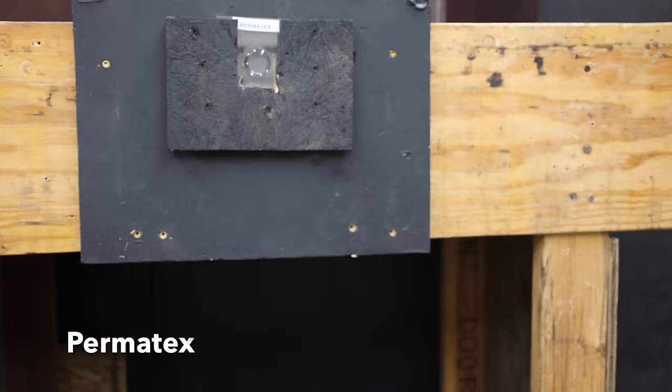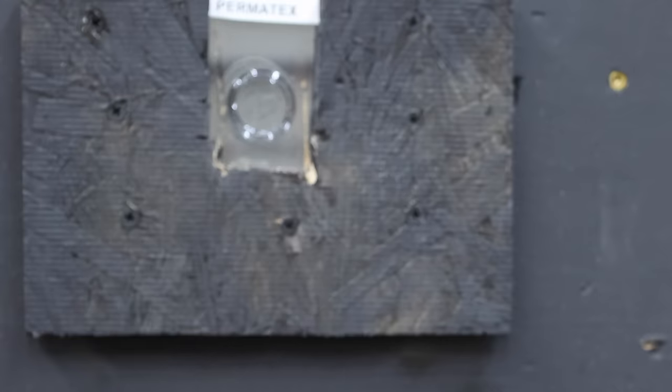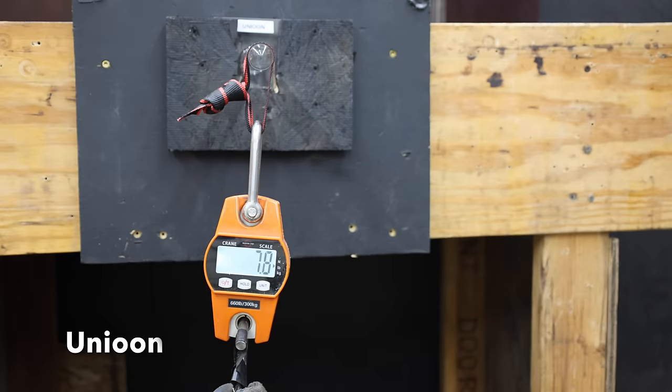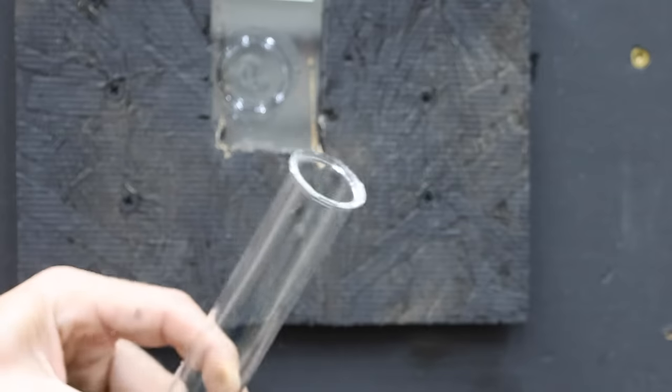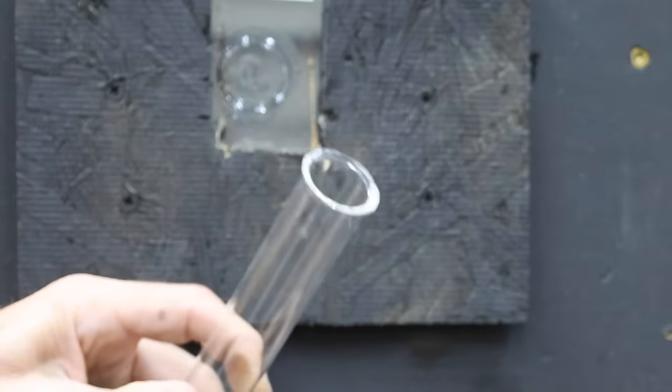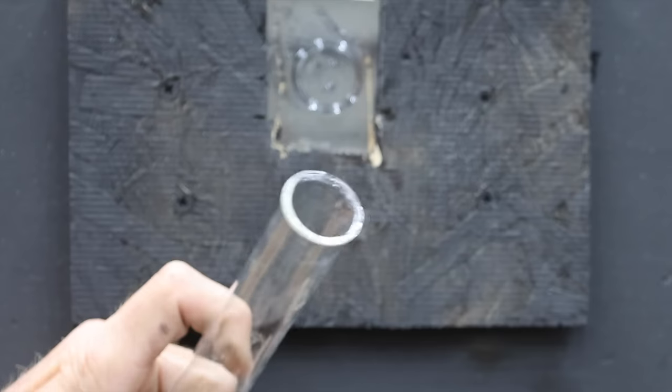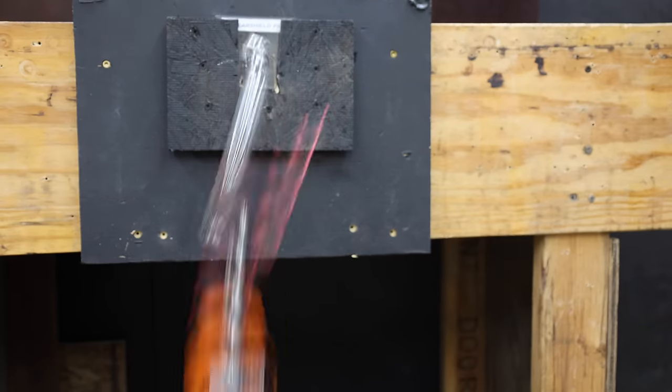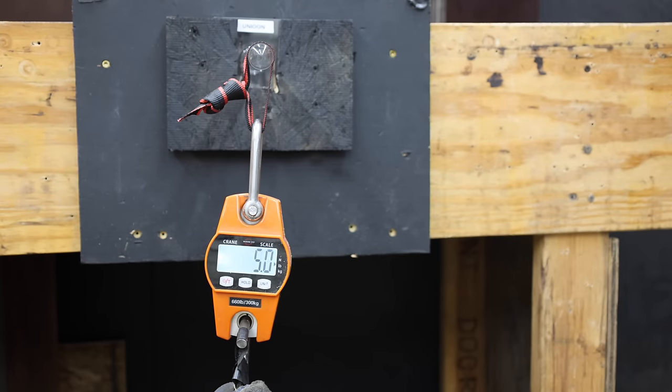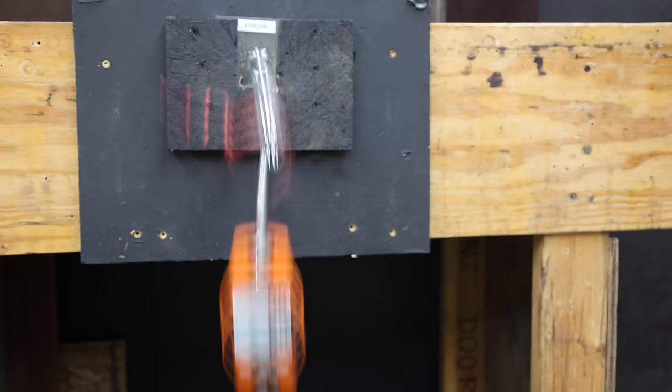And the Permatex outlasted the glass, and the glass broke at 20.6 pounds. Unfortunately, the Union let go at 8.6 pounds. So, that's less than half the strength of the other repair resins. And the Athlon Tools resin has even less strength than the Union brand at only 4.6 pounds. And the ClearShield pit filler outlasted the glass at 12.5 pounds. So, the Union and Athlon Tools were the only two brands that struggled on this test.